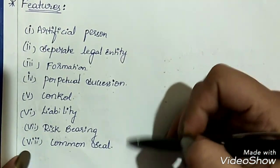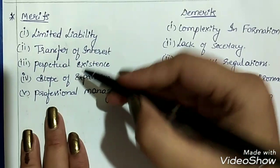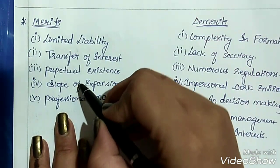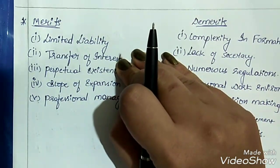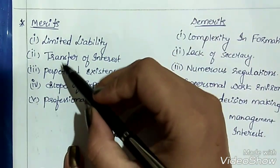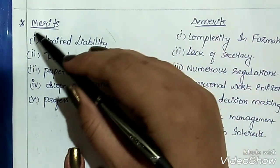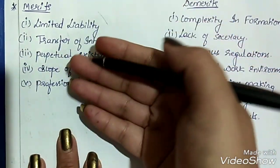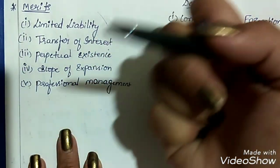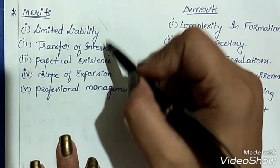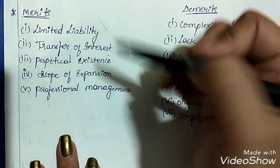These were the features of a joint stock company. Now let's discuss the merits. First is limited liability — each and every owner has limited liability, so if losses occur, they will be affected only to the extent of their capital contribution. Second is transfer of interest — a person who does not want to continue as owner or loses interest can easily transfer their shares to others, which is also a merit.